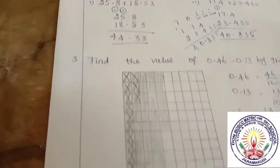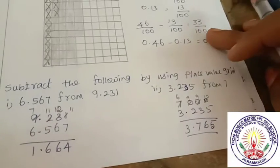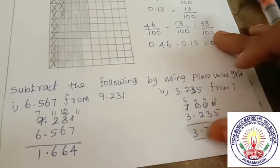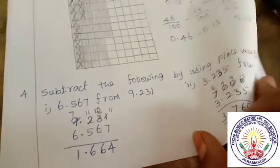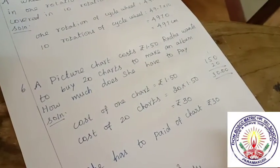Now verify the boxes. 46 divided by 100 minus 13 divided by 100. 6 subtracted from 3 is 3. 4 subtracted from 1 is 3. So 33 divided by 100.